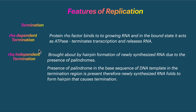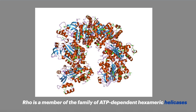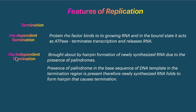In Rho-independent termination, palindromic sequences are present in the terminal region of the RNA. Just like 'madam' reads the same forward and backward, the palindrome in the terminal RNA causes complementary RNA to fold back on itself and form a hairpin structure. This hairpin formation causes termination without any protein factor.